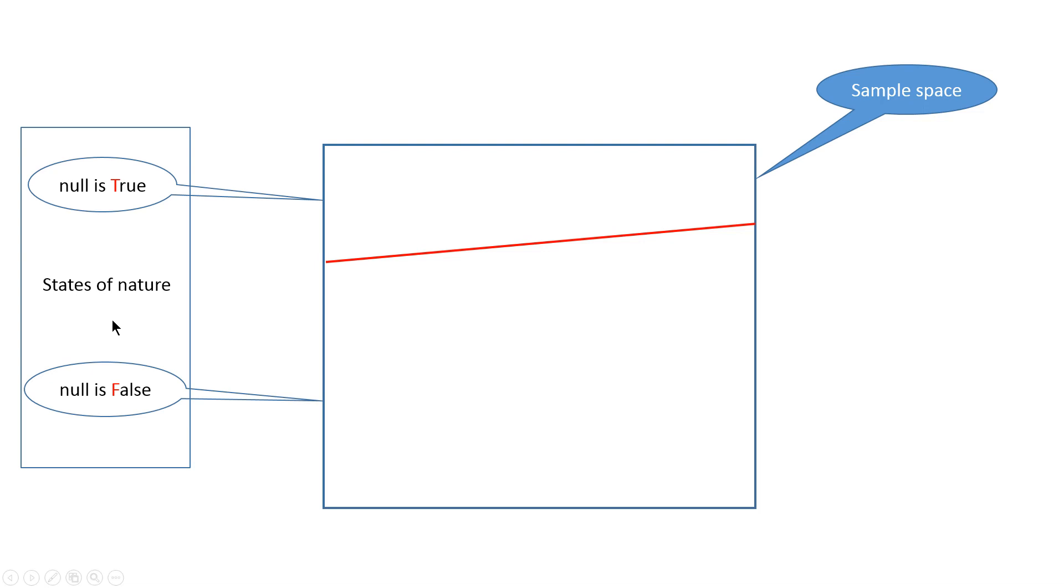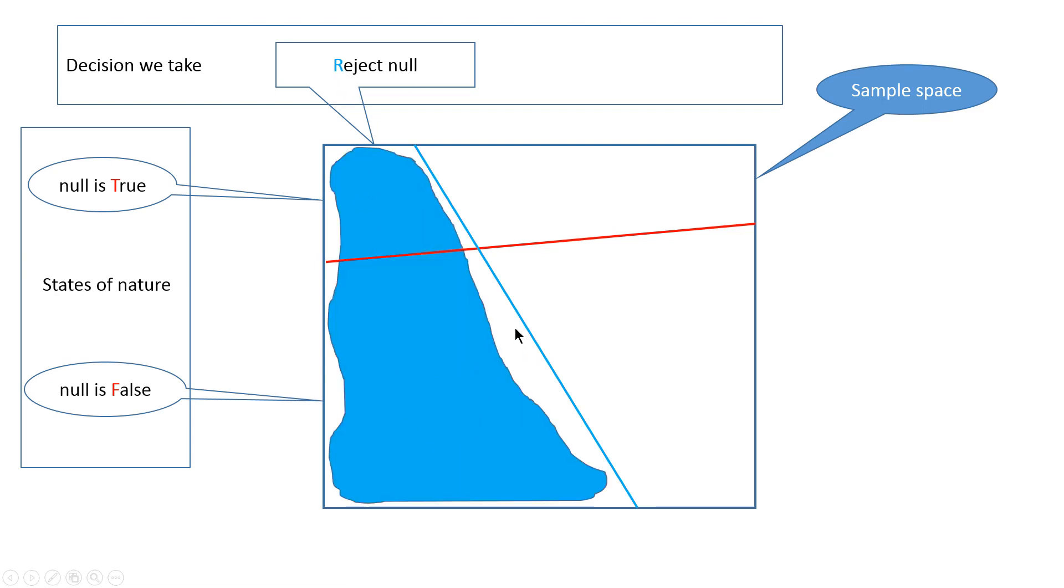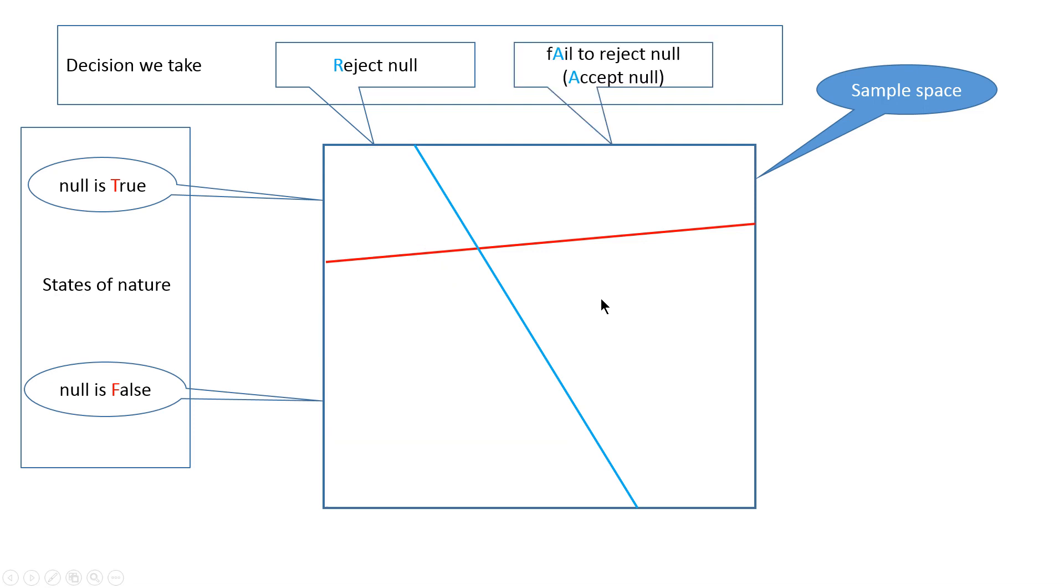We conduct a statistical test, and based on the results of the test we take decisions. We can reject the null, which will be the whole area to the left of this blue line. Or based on the result of our test, we can fail to reject the null, or alternatively we can say accept the null. People usually say cautiously fail to reject the null because when you fail to reject the null you do not necessarily accept that it is true, but in fact people act as if they accept the null.